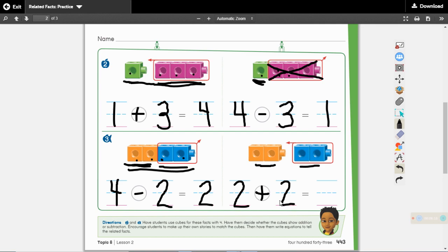2. 2 plus 2 equals, how many are all together? 1, 2, 3, 4. 2 plus 2 equals 4.